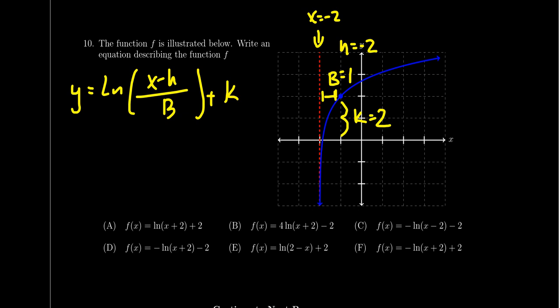And so therefore, our formula is going to look something like the following. f of x equals the natural log of, well, we had x minus a negative 2, so that's going to be x plus 2. b value is 1, so you don't see a fraction there. And then we shift everything up by 2.